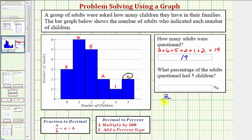Now that we know the fraction of adults that had five children, we can convert this fraction to a percentage to answer this question. We'll also solve this a second way using a percent proportion. But to convert a fraction to a percent, we first convert to a decimal by dividing, and then we convert the decimal to a percent.